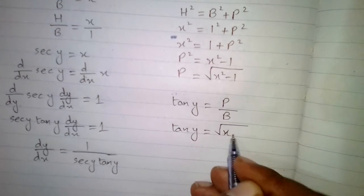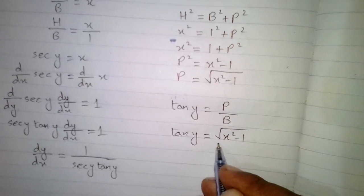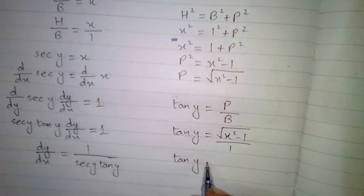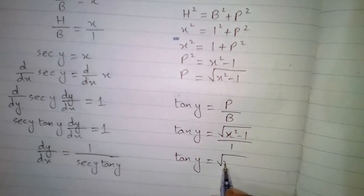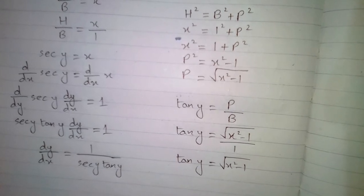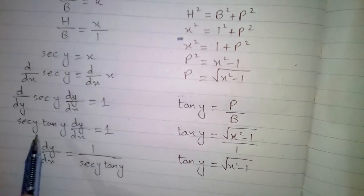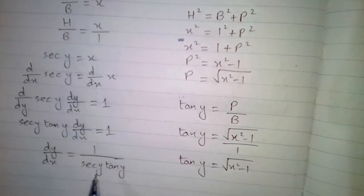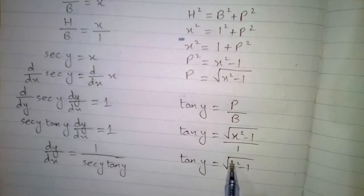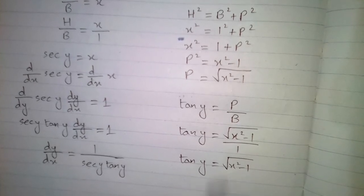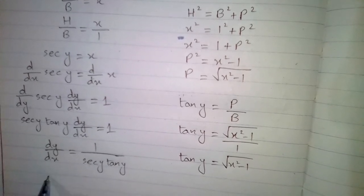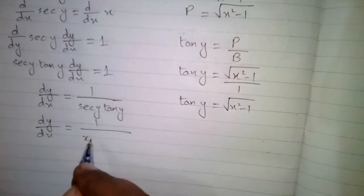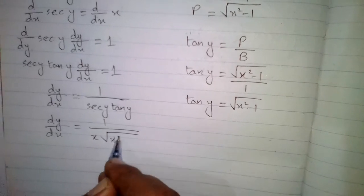So tan y equals square root of x square minus 1 upon 1, which gives tan y equals square root of x square minus 1. Now we put the value of sec y which is x, and the value of tan y which is square root of x square minus 1, so dy by dx equals 1 upon x times square root of x square minus 1.